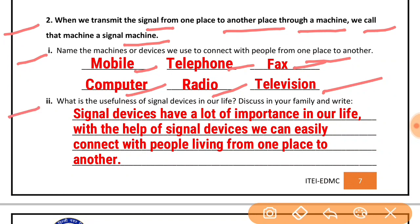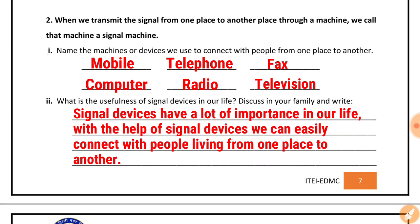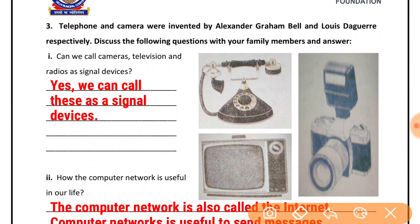Next question: what is the usefulness of signal devices in our life? Hamare jeevan mein signal devices kyun mahatvapurn hain? Discuss in your family and write. Signal devices have a lot of importance in our life. With the help of signal devices, we can easily connect with people living from one place to another — hum ek isthan se doosre isthan par reh rahe logon se aasani se sampark kar sakte hain.